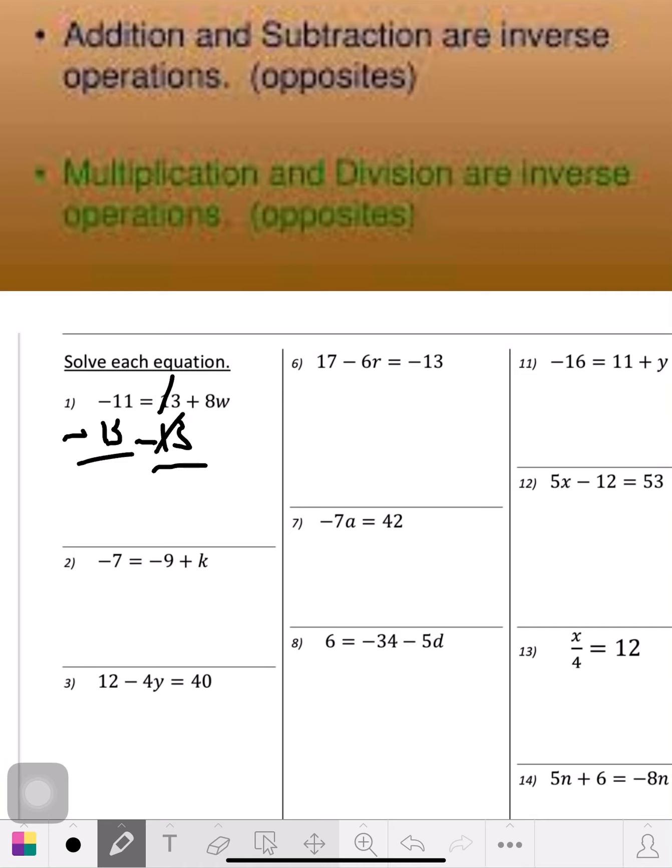Now bring it down. These two cross out—the positive 13 and the negative 13 cross out. Now you got negative 11 minus 13, so the way that works is you're still going to the left, you're going to come up with a negative number. So it's going to be negative 24.